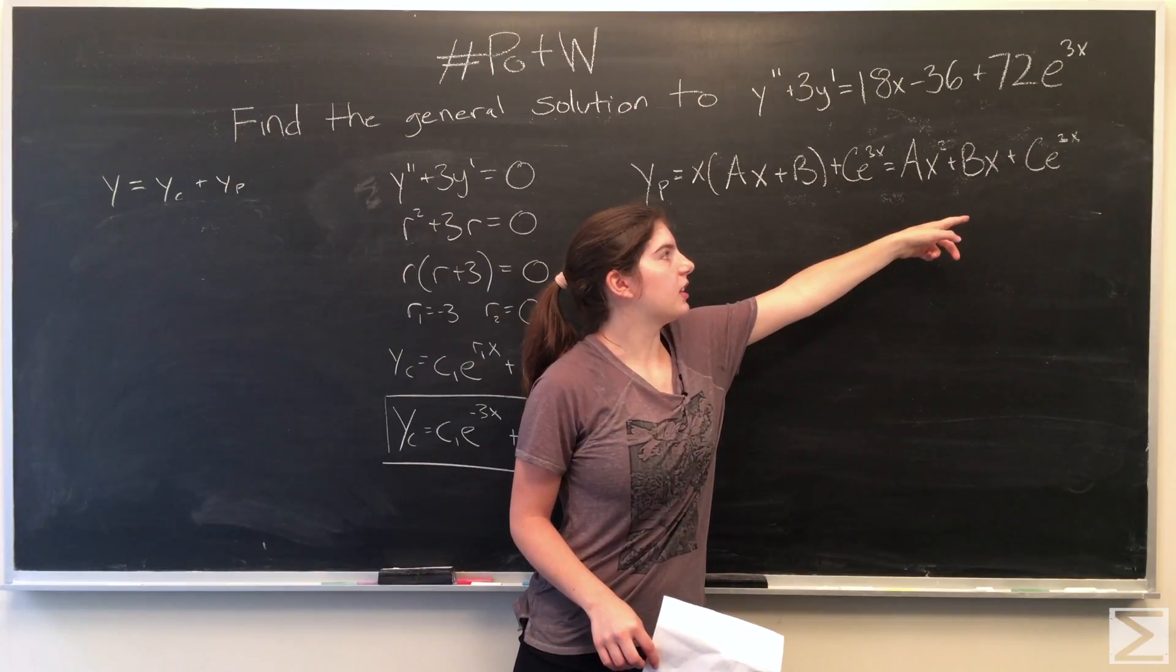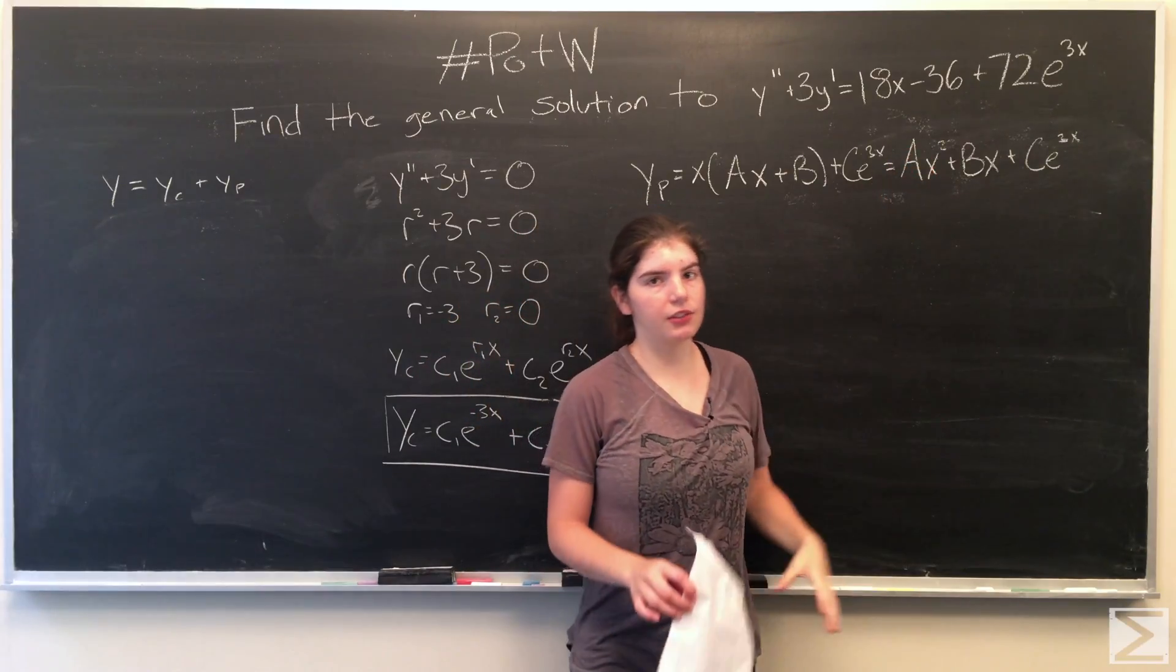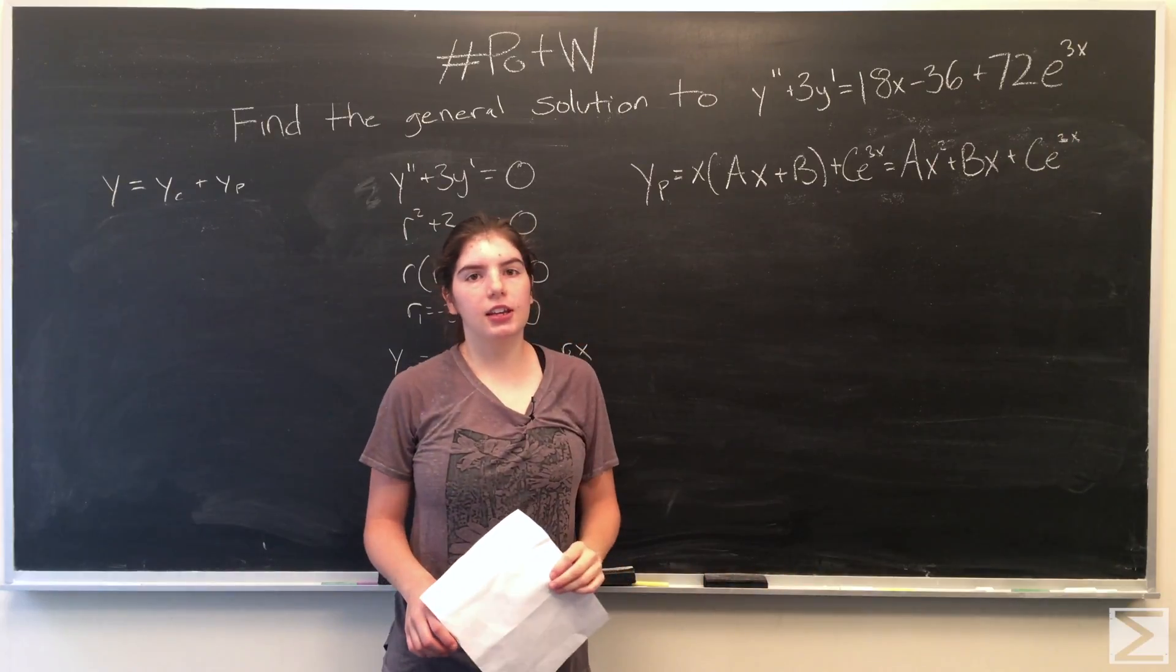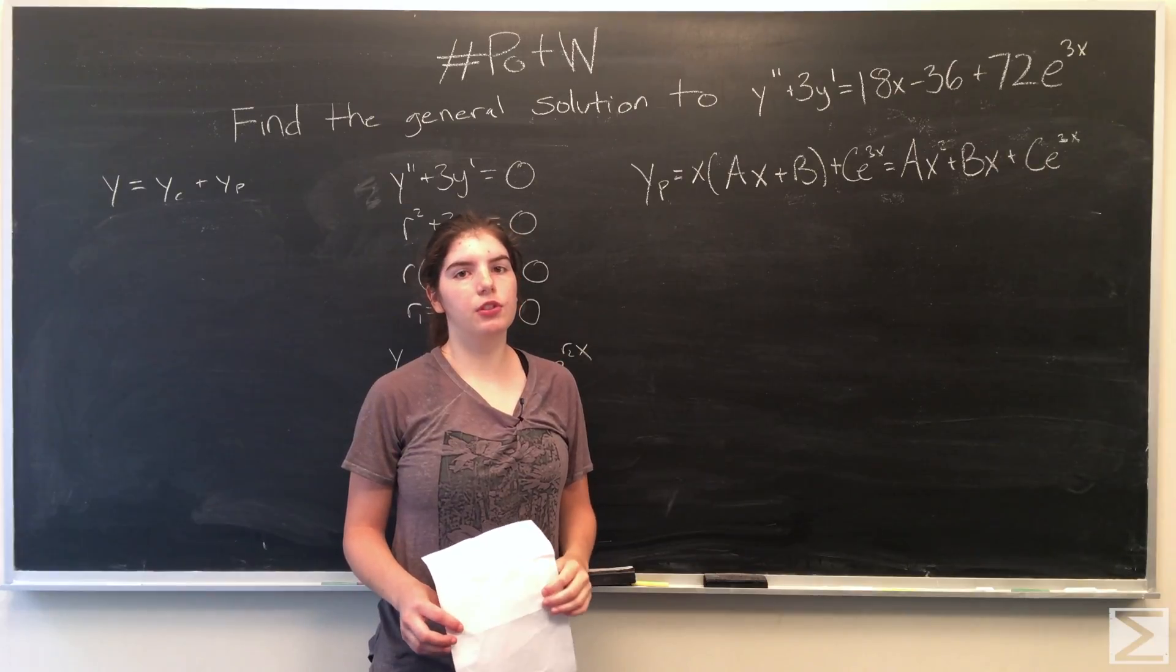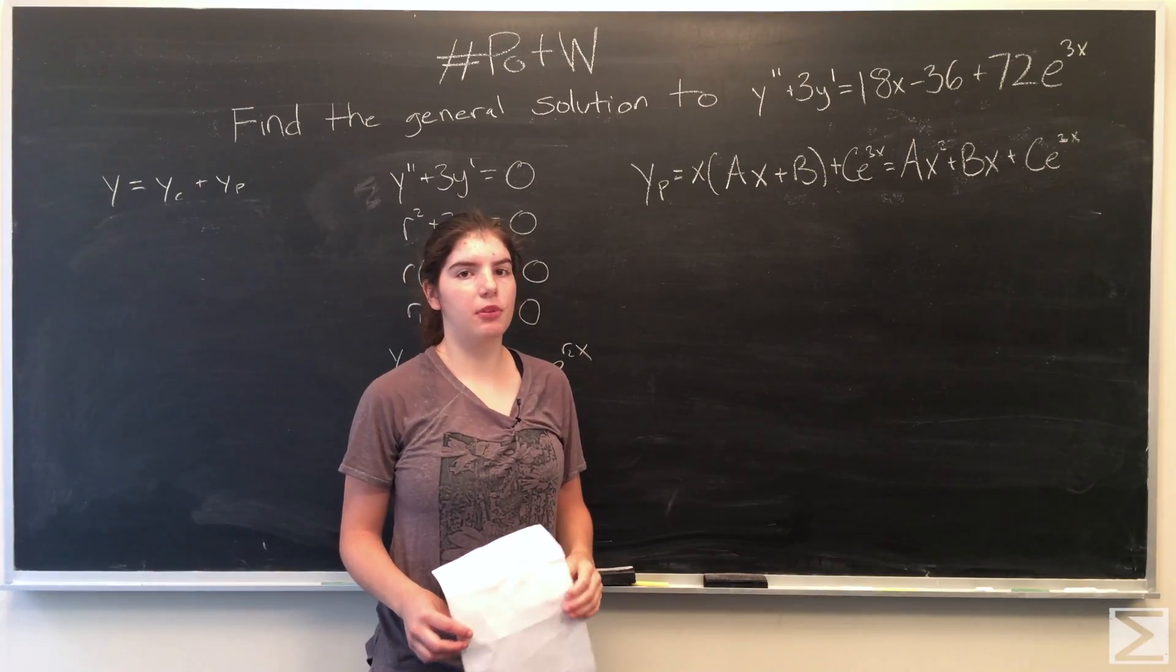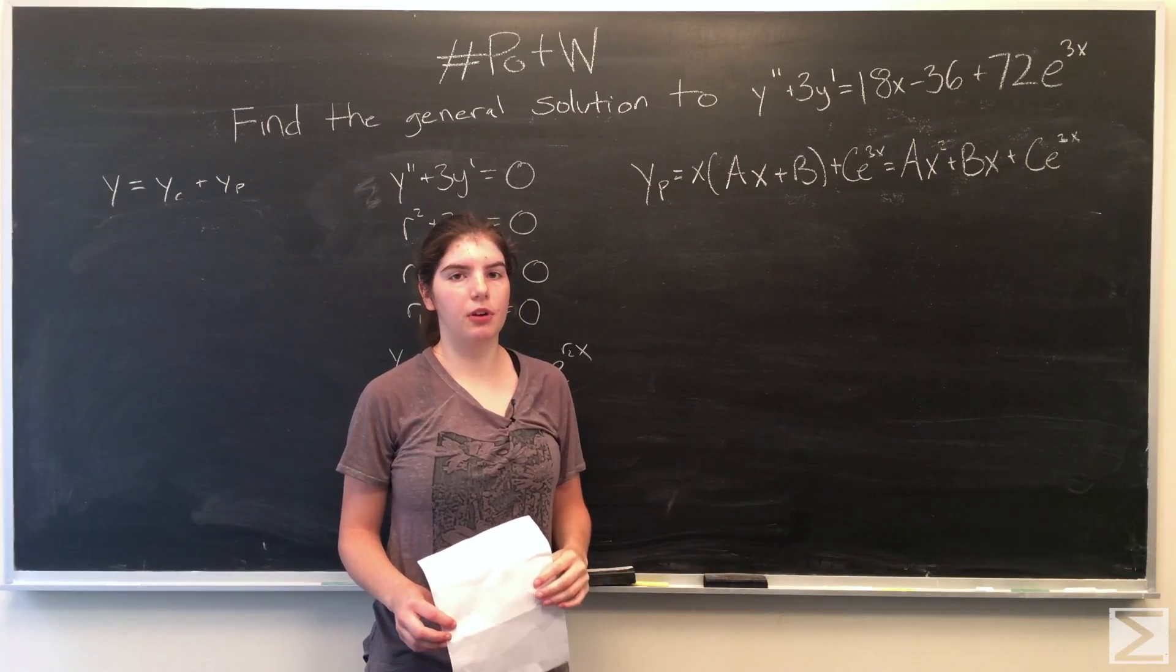And ce to the 3x accounts for 72e to the 3x. Now we're going to take the first derivative and the second derivative of the particular solution, and we'll substitute the first derivative into y prime and the second derivative into y double prime.